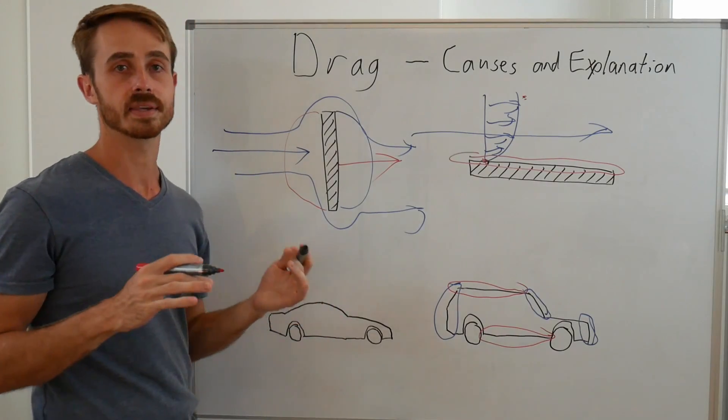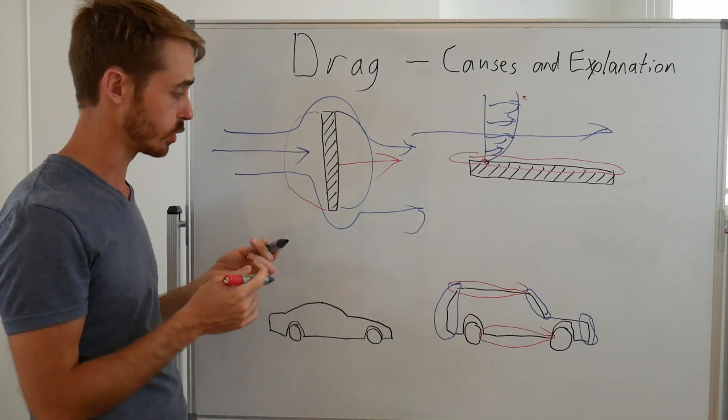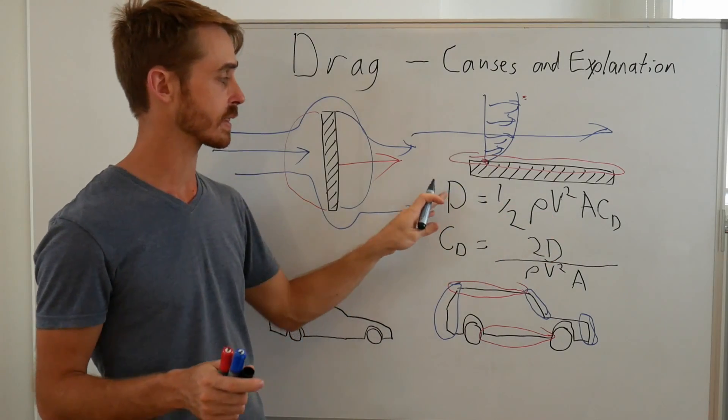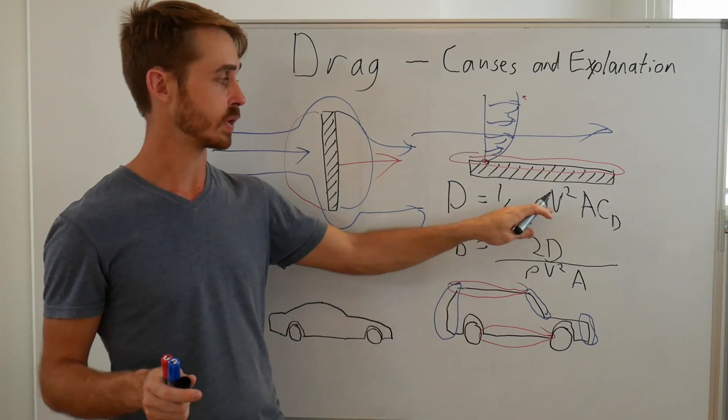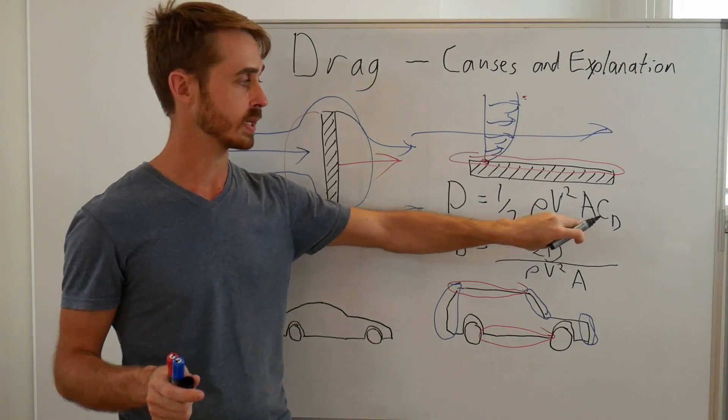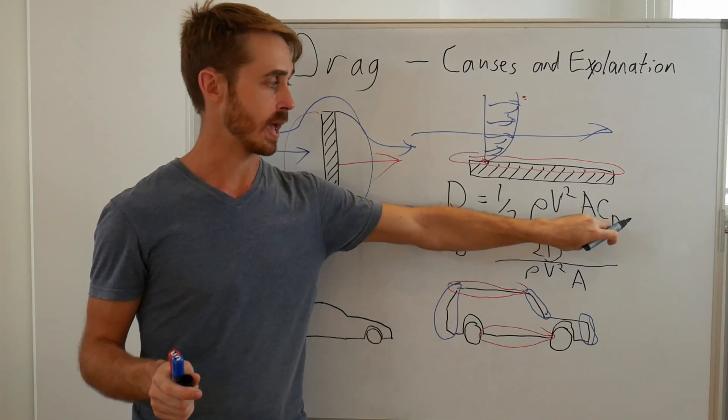The CD is back calculated from an equation for drag. Let me show you. So these are the basic equations we get. The top one is for calculating the drag force if we know our air density, our velocity, our area, and our coefficient of drag.